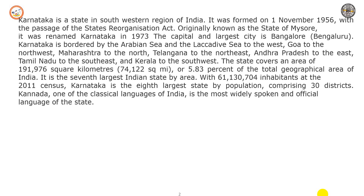In 1973, the capital and largest city became Bangalore. Karnataka is bordered by Kerala to the west, Goa to the northwest, Maharashtra to the north, and Telangana to the northeast. The state covers an area of 191,976 square kilometers, or 5.8 percent of the total area of India.